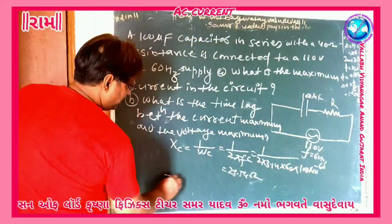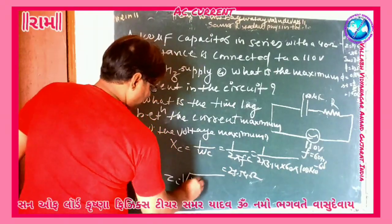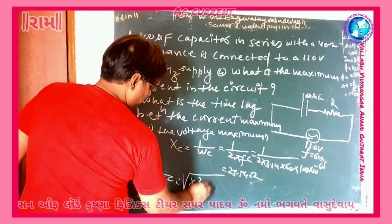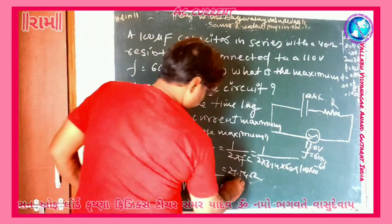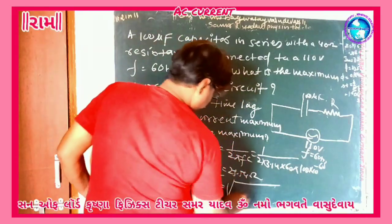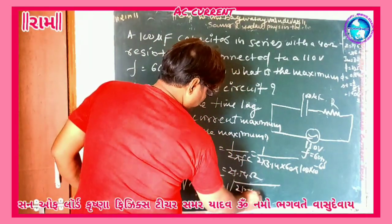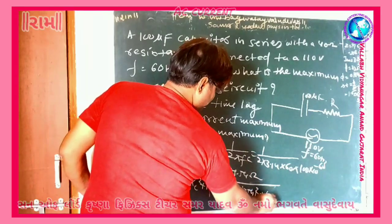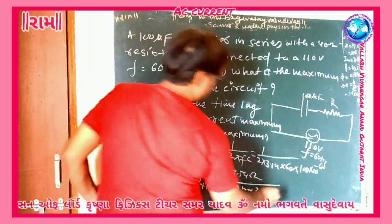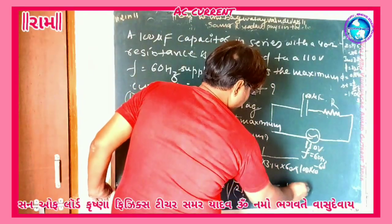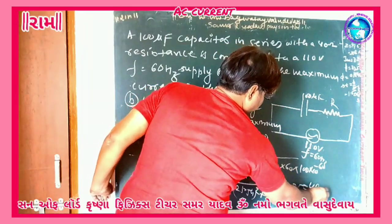Now we know that Z is equal to the square root of Xc squared plus R squared. So keeping the values: Xc = 25.54 squared plus 40 squared. So we get Z = 47.5, approximately equal to 48 ohm.